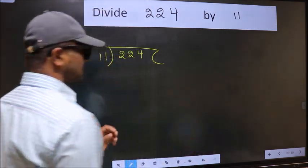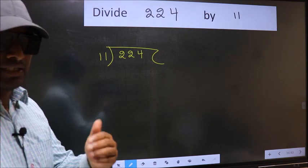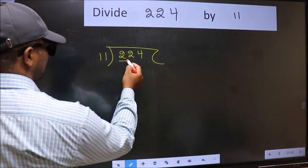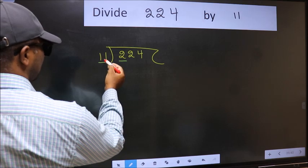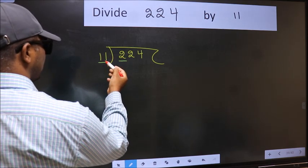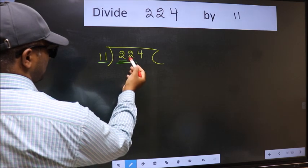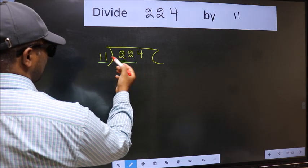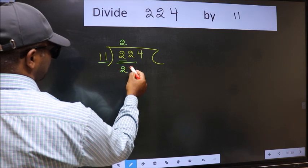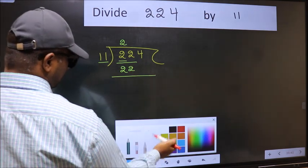This is your Step 1. Here we have 2, and here 11. Since 2 is smaller than 11, we should take two numbers: 22. When do we get 22 in the 11 times table? 11 times 2 equals 22.